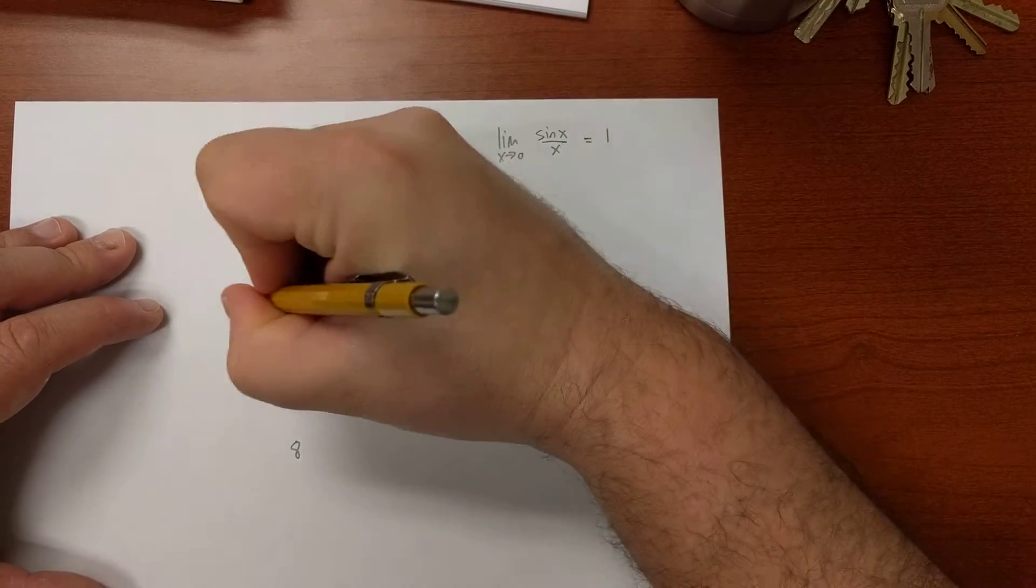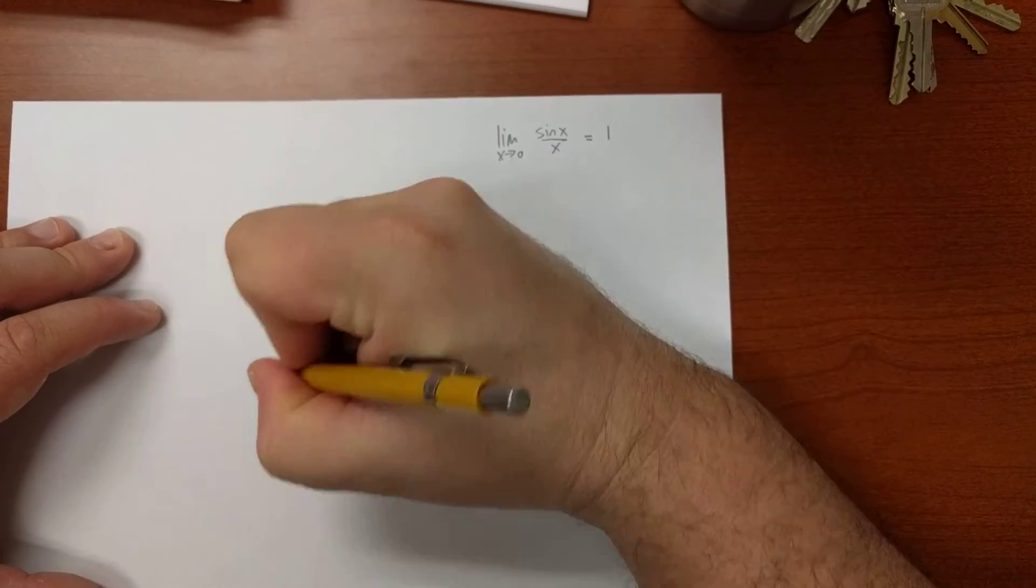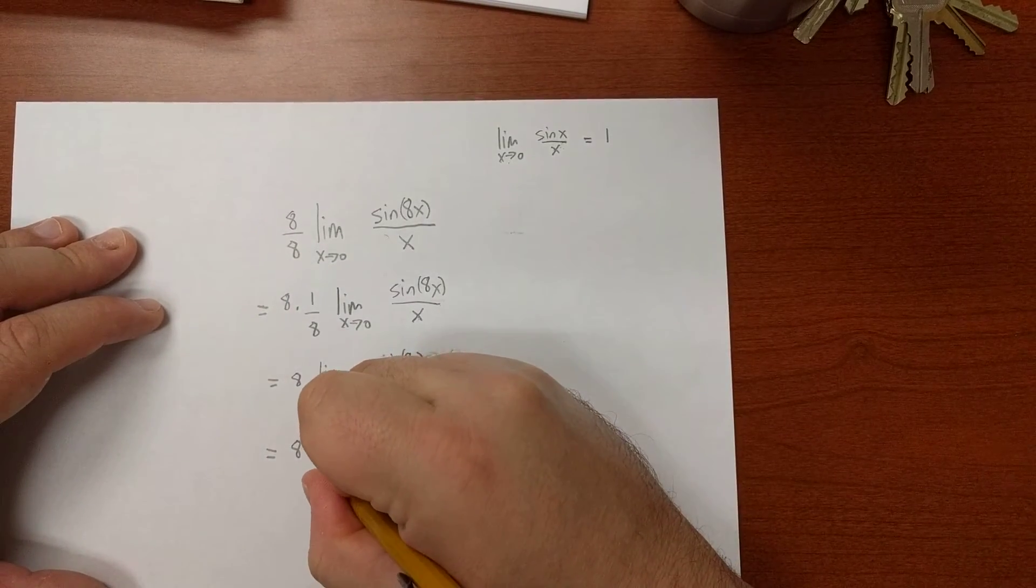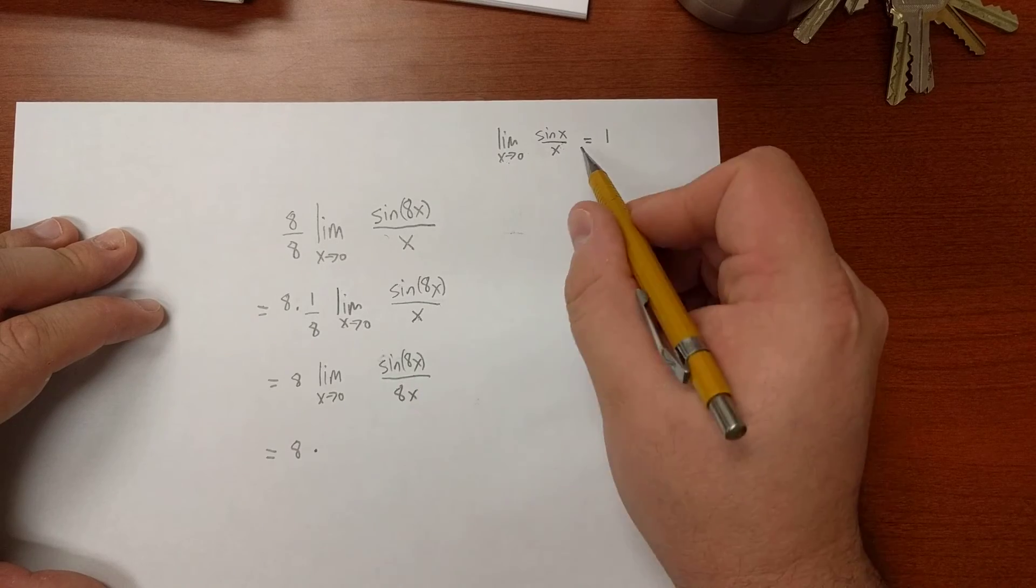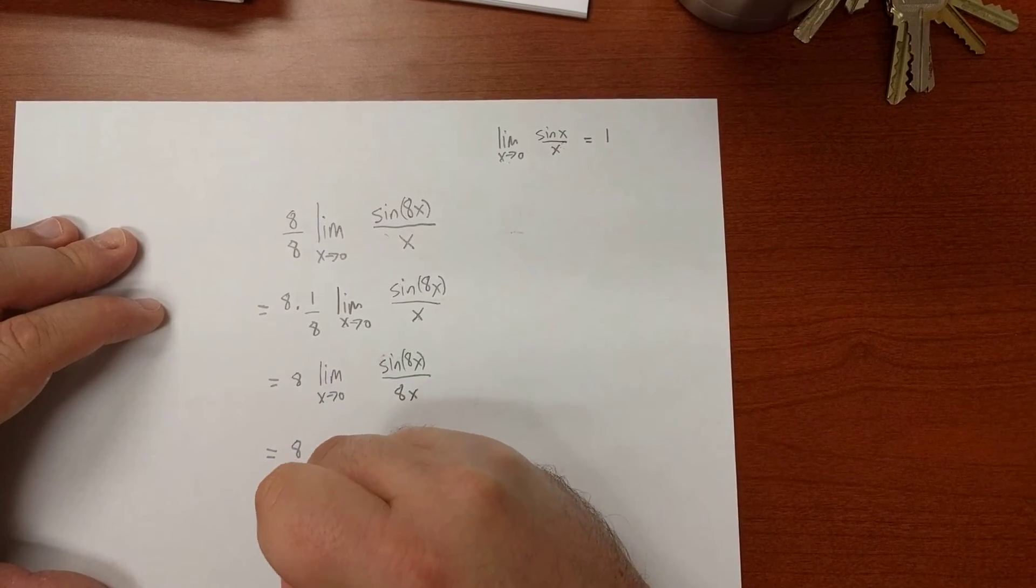So, we know that this is equal to 8 times this limit, which we know has to be 1. So, the answer is 8.